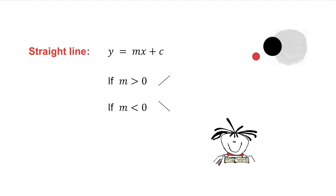With a straight-line graph, the general equation is y equals mx plus c. If m is positive, the graph slopes up. If m is negative, the graph slopes down.